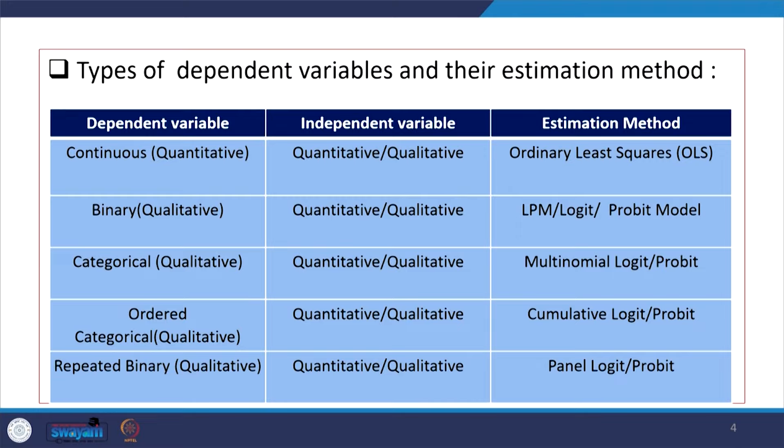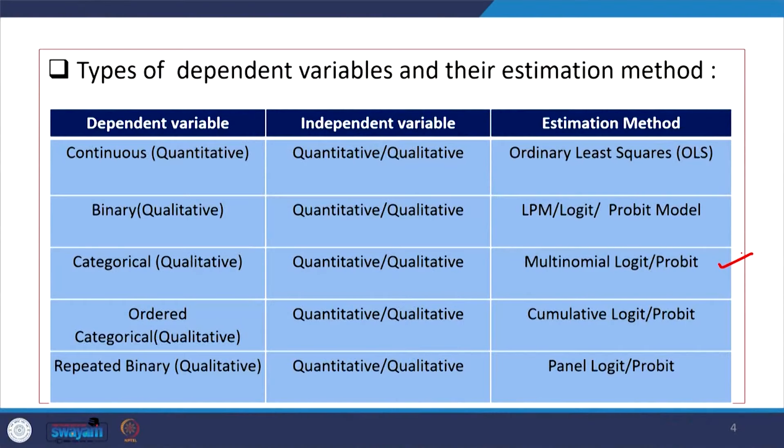When your dependent variable is binary but qualitative binary, and the independent variable may be of mixed kind, you are supposed to apply the linear probability model, logit model, or probit model. If the dependent variable is categorical rather than binary, multinomial logit regression is applied.